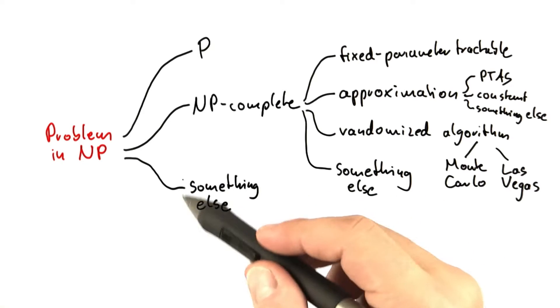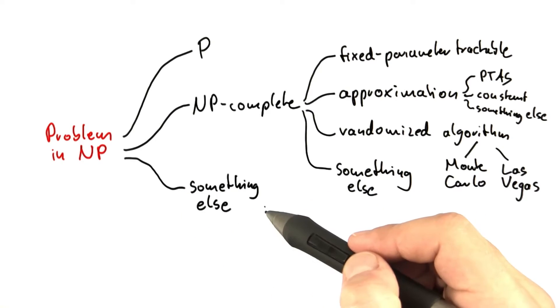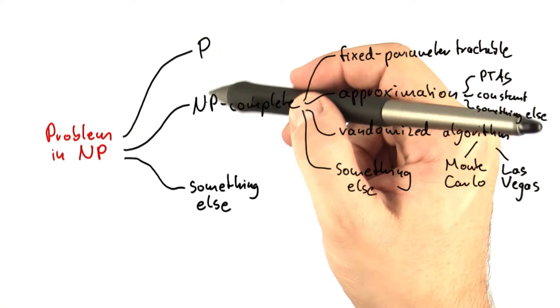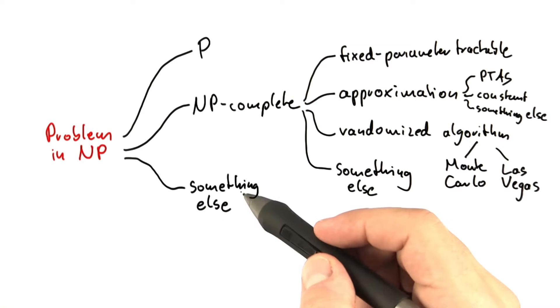We haven't really talked about this something else here, but there are some problems which are believed to be somewhere in between P and NP, at least if P does not equal NP, of course. One example here would be factoring two large numbers.